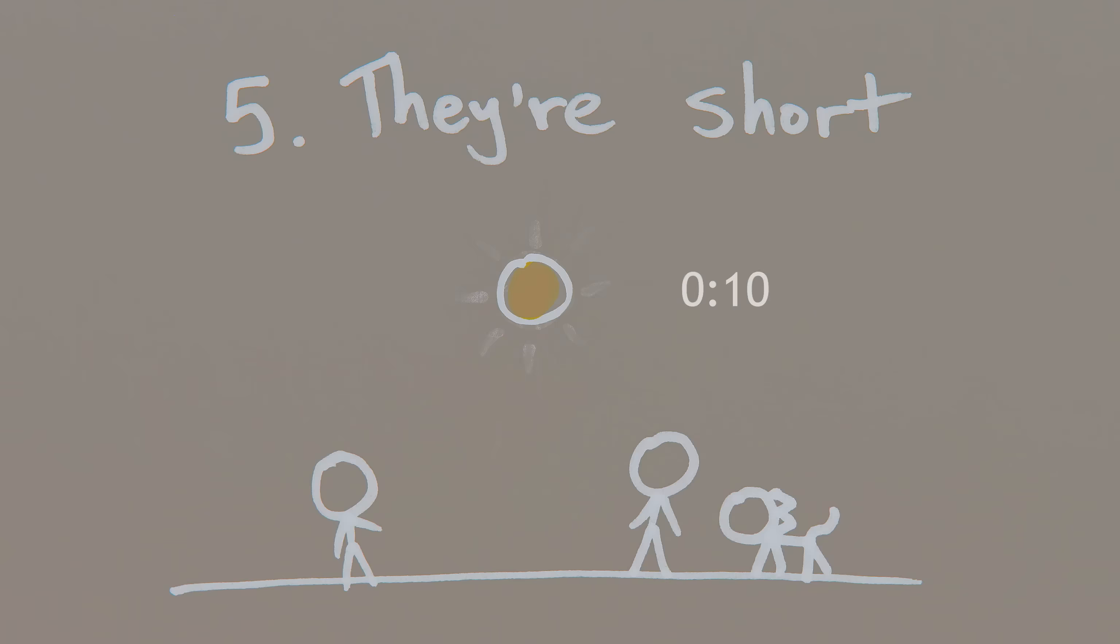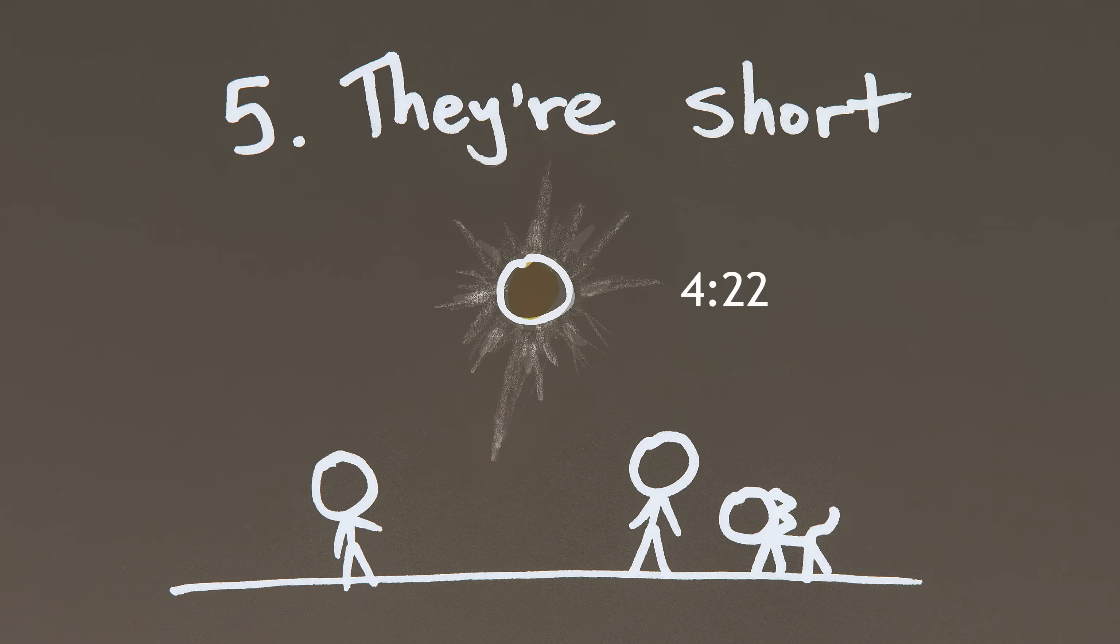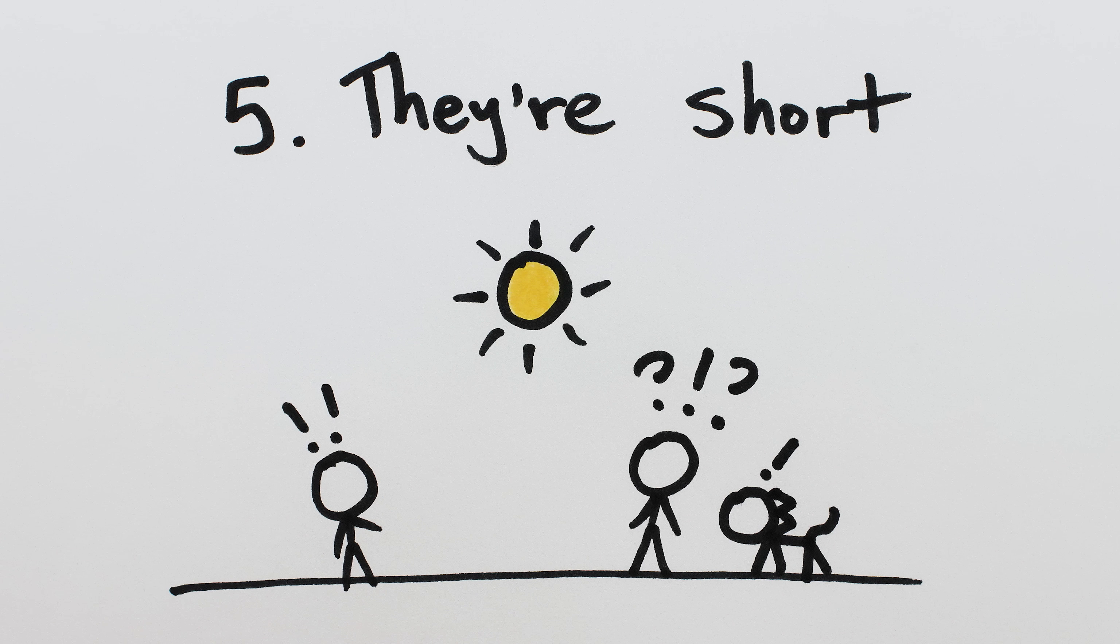Fifth, eclipses are fleeting. Totality typically only lasts a few minutes, which makes them feel even more precious and cosmic, and also doesn't give our human brains time to really process or take in the weirdness of what's happening before it's over.